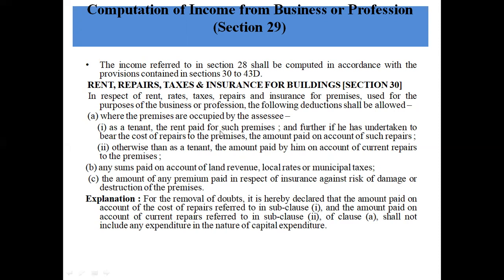If the assessee is a tenant, the rent paid for such premises and, if he has undertaken to bear the cost of repairs, the amount paid on account of such repairs. If he occupies the premises otherwise than as a tenant, the amount paid on account of current repairs. Any sum paid on account of land revenue, local rates or municipal taxes, and the amount of any premium paid in respect of insurance against risk of damage or destruction of the premises.